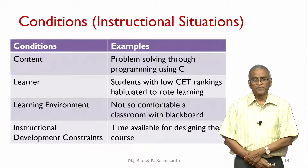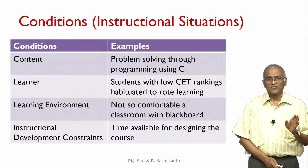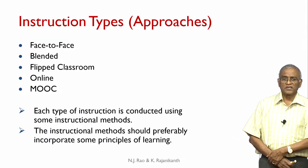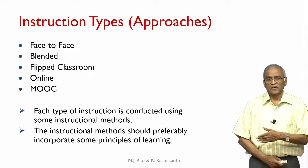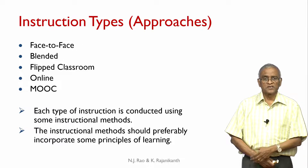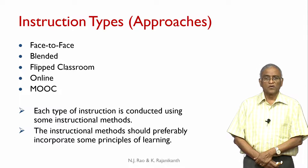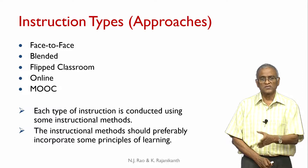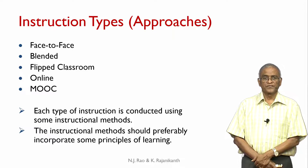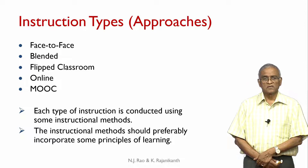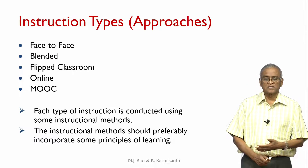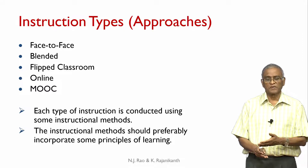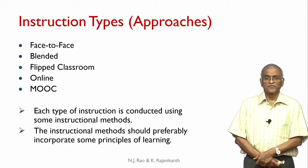So we looked at how the instructional situation has values and conditions. Now we talk about instruction types, also called approaches. There are about five of them. One is face-to-face, which is the most dominant — the teacher doing instruction face to face in a classroom or otherwise. You can have blended learning, where part of the instruction takes place on the internet and part takes place face to face.